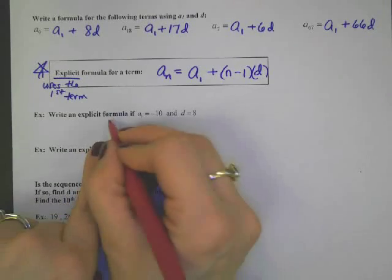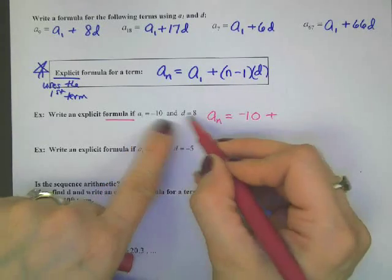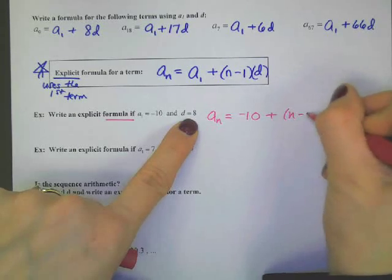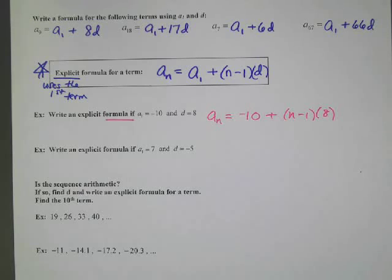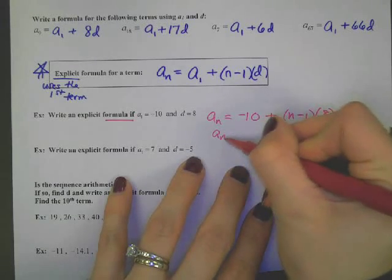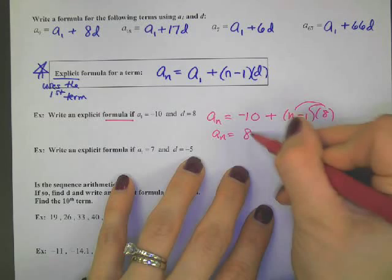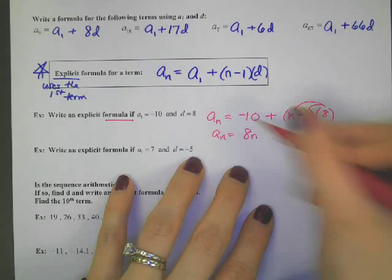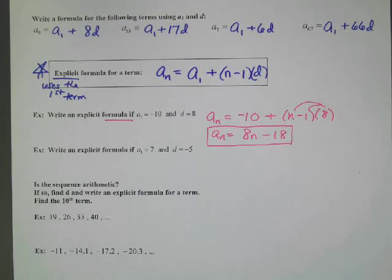When it says explicit, this is the one we're going to like — it uses the first term. Write a formula for a term: a sub n. Anytime you want to find a term, you always start with the first one and add on some Ds. How many Ds to get to the nth one? N minus 1. One less D. So whenever you have formulas like this, you're going to want to distribute them, simplify them, and clean them up.